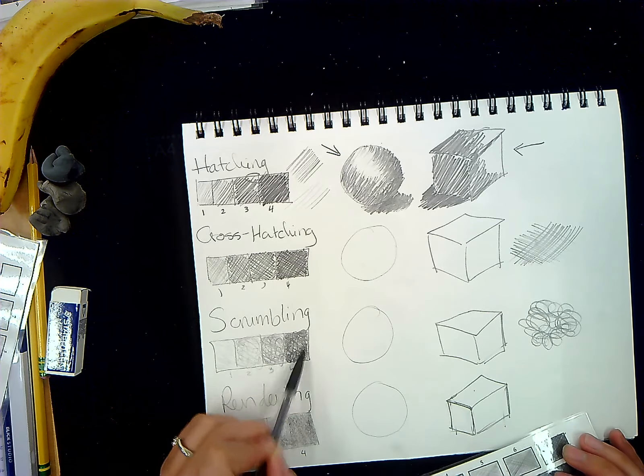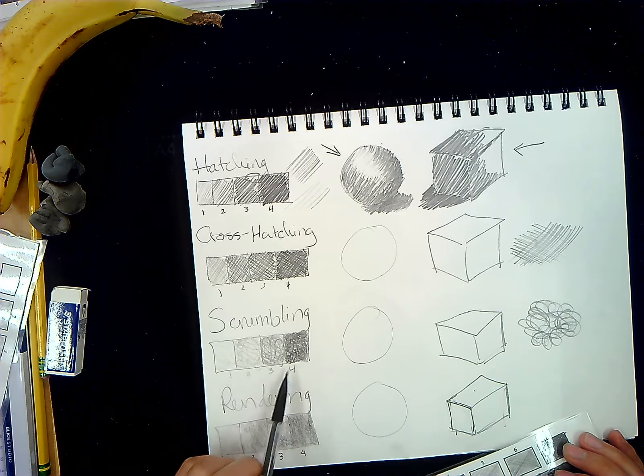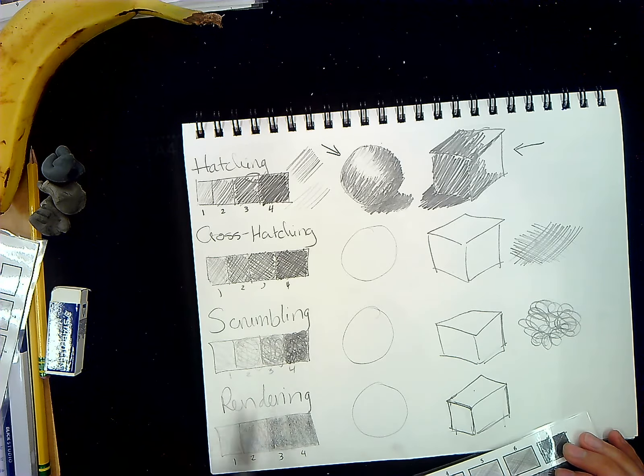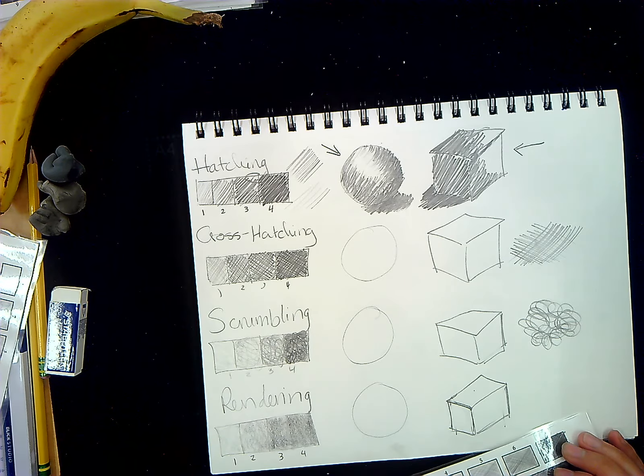Remember, scumbling is where you are going to be essentially making scribble marks. But as you move down or up the stepped value scale, you are going to go lighter to darker.